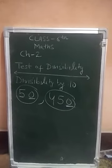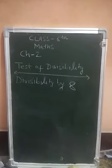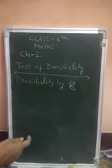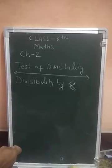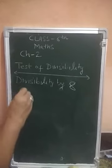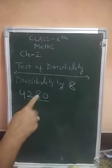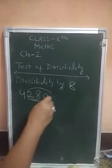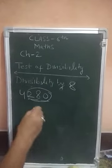Now divisibility by 8. If you want to check whether a number is divisible by 8, you have to check the last 3 digits — that is, the number formed by the digits at 100's, 10's, and 1's place. If those 3 digits form a number that is divisible by 8, then the whole number is also divisible by 8.